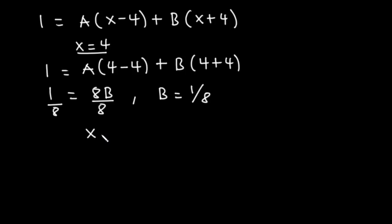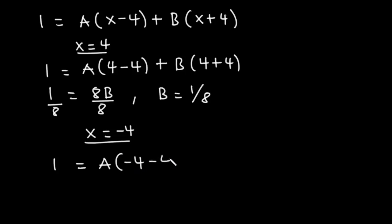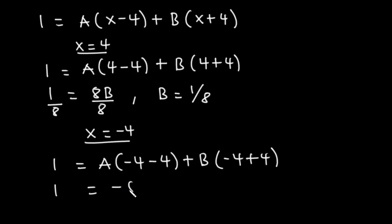Now let's make x equal to negative 4. We have 1 = A(-4 - 4) + B(-4 + 4). Negative 4 minus 4 is negative 8, giving -8A. Negative 4 plus 4 is 0, so the B term vanishes. Dividing both sides by negative 8, we get A = -1/8.